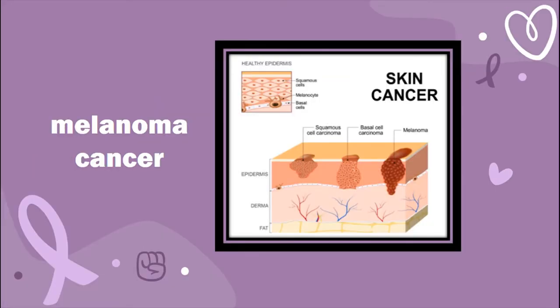What is melanoma cancer? Melanoma is a serious form of skin cancer that begins in the cells known as melanocytes. While it's less common than basal cell carcinoma and squamous cell carcinoma, which are also types of skin cancer, as we can see in the figure, melanoma is more dangerous because of its ability to spread to other organs and is more repetitive if it's not treated at an early stage.